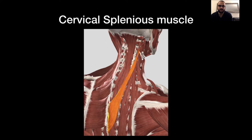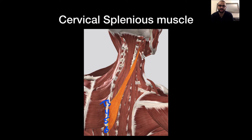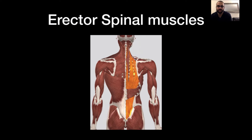The next one is the splenius cervicis muscle. This one originates from T3 to T6 and inserts at the transverse process of C1 and C2. When these muscles contract, they extend and rotate the neck.